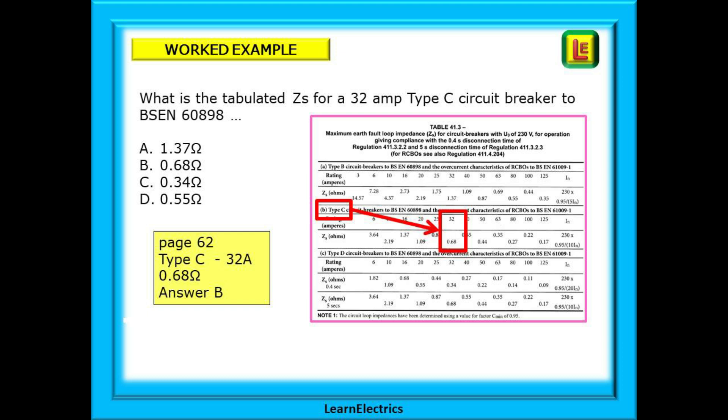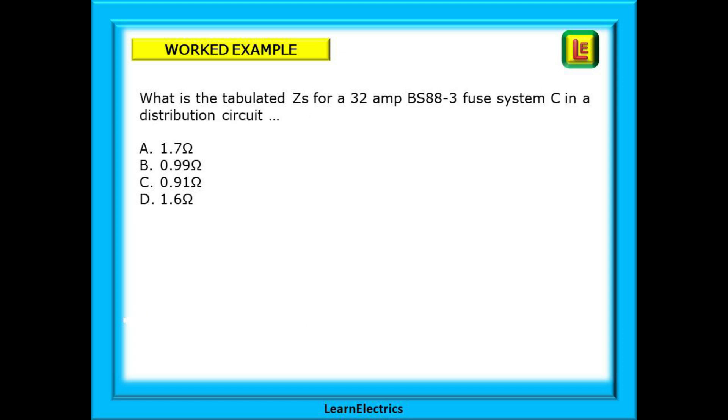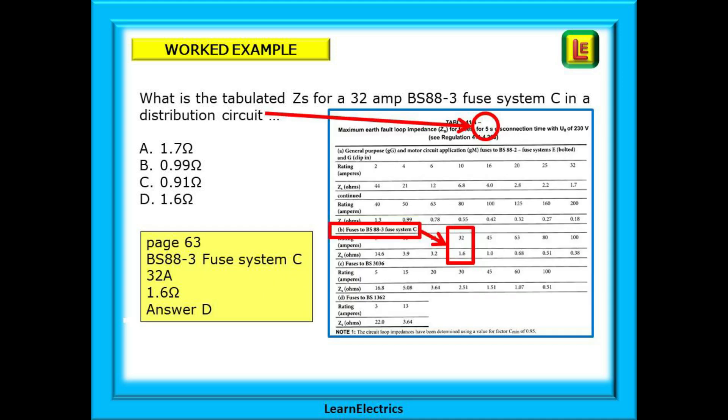Another example. The question asks: What is the tabulated ZS for a 32 amp BS88-3 fuse system C in a distribution circuit? This time we want table 41.4 on page 63.